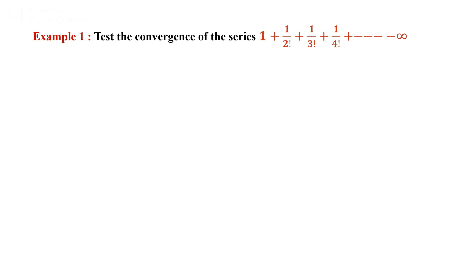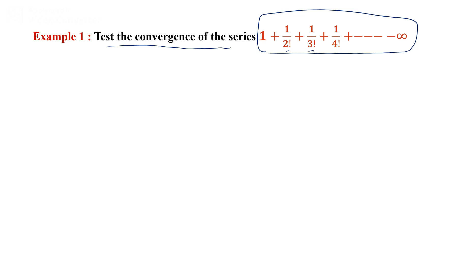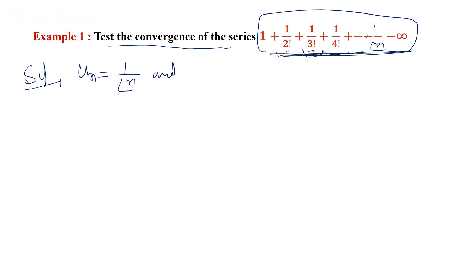Example: Test the convergence of the series 1 + 1/2! + 1/3! + ... The sign is not alternating and the series is completely positive. We write the nth term: the first term is 1, the second is 1/2!, the third is 1/3!, and similarly the nth term is 1/n!.